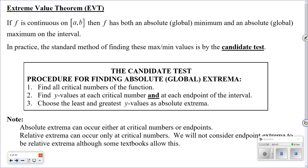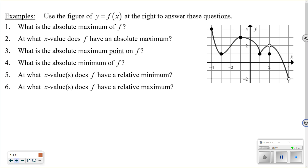The extreme value theorem says: if f is continuous on the closed interval from a to b, then f has both an absolute minimum and an absolute maximum. As a side note, absolute extrema can occur at critical numbers or at endpoints, while relative extrema only occur at critical numbers — endpoints are not considered for relative extrema.